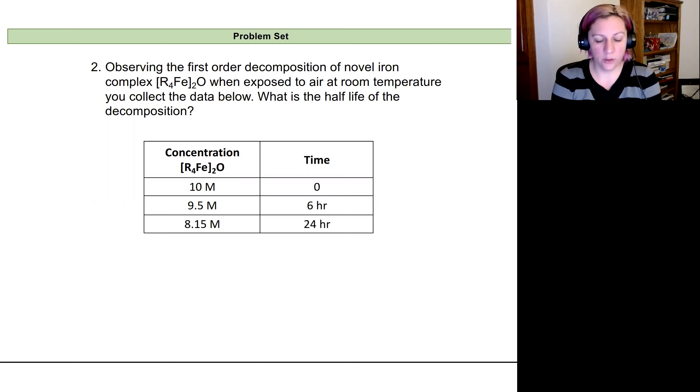So in this one, we're going back to our problem that we were working on earlier in the lectures, looking at this iron dimer reacting with hydrochloric acid. We're going to have the dimer do a different reaction now. Our dimer is going to have a first order decomposition. The dimer is going to break down into a couple of different things when it's exposed to air at room temperature.